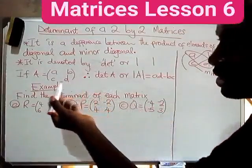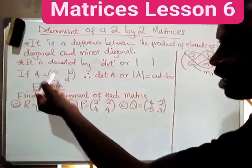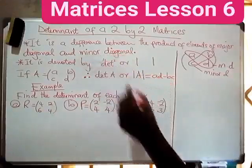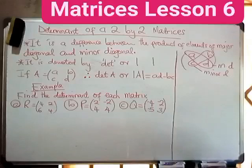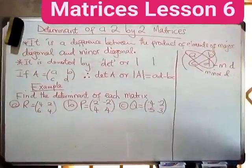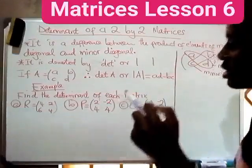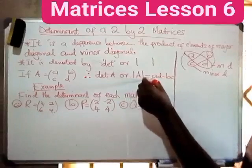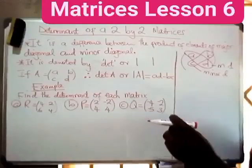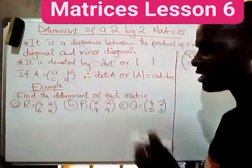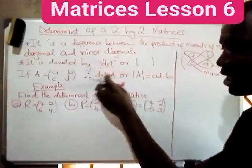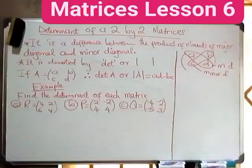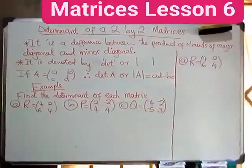Before we go to the examples, the determinant is denoted by 'det'. So if you see this in your exam, either in paper one or paper two, 'find the det A' means you are finding the determinant. If they write it in the bracket notation like this, it also means you are finding the determinant of that matrix.